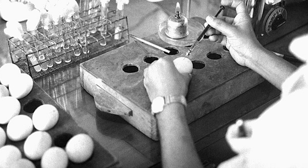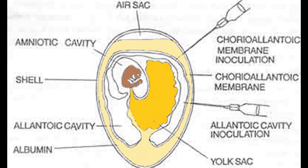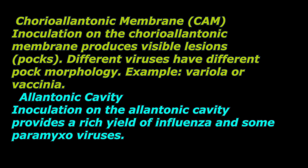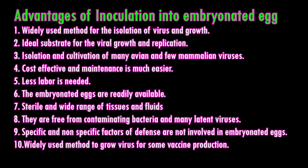The embryonated egg inoculation method uses embryonated hens or goose eggs for virus inoculation. A hole is drilled in the shell of a sterile egg and virus suspension is injected into the fluid of the egg. The chorioallantoic membrane, amniotic cavity, allantoic cavity, and yolk sac are inoculated depending on the virus. Viral growth in the egg embryo is indicated by the death of the embryo, by cell damage, or by the formation of typical pocks or lesions on the egg membrane. Embryonated egg inoculation is the widely used method because it is cost-effective, readily available, sterile, requires less labor, and maintenance is much easier.